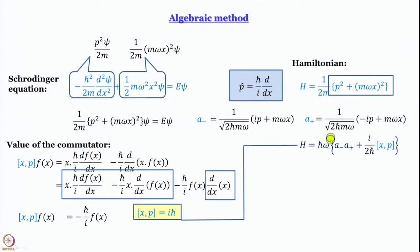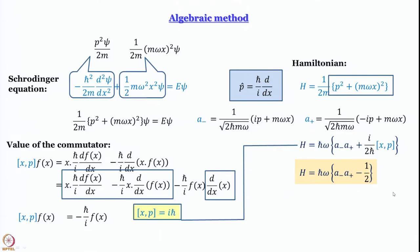We take [x,p] = iℏ and plug it into the expression for the Hamiltonian: H = ℏω·(a⁻a⁺) + i/(2ℏ)·[x,p]. Substituting iℏ for [x,p]: i×i = −1, and ℏ in numerator and denominator cancel, leaving −1/2. So the Hamiltonian simply becomes H = ℏω(a⁻a⁺ − ½). We have expressed the Hamiltonian in terms of ladder operators in a very simple form.